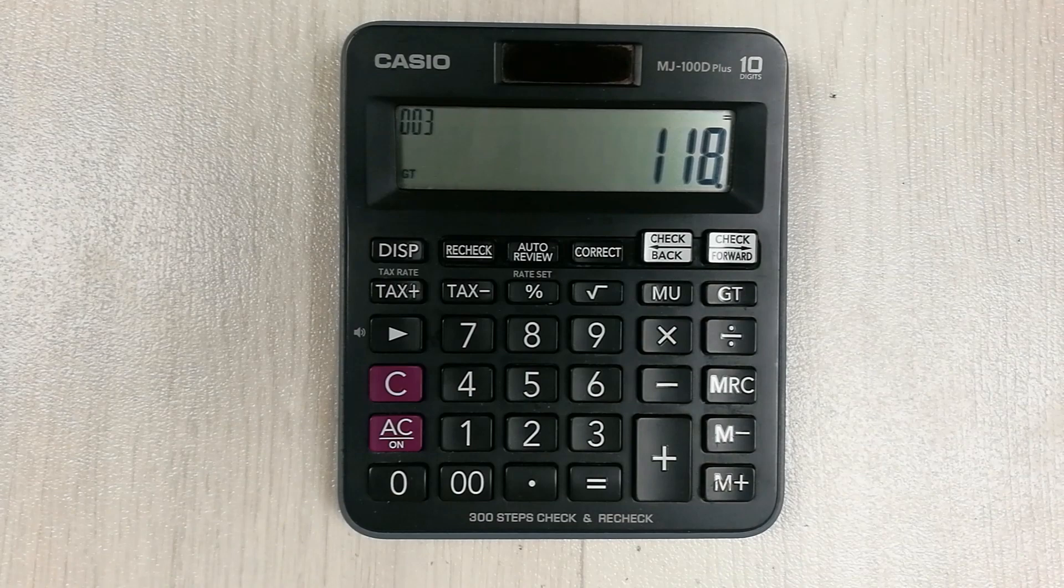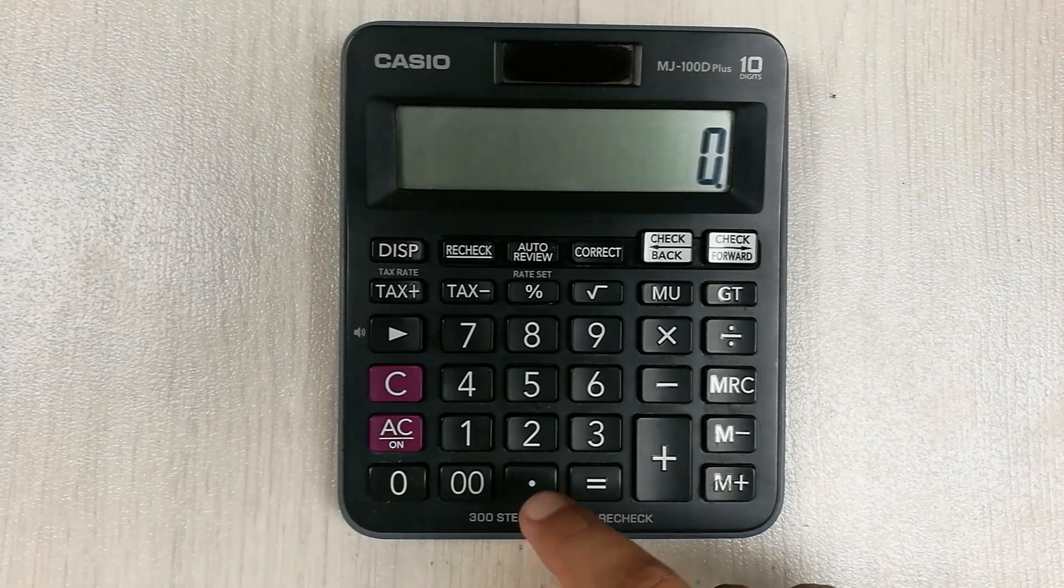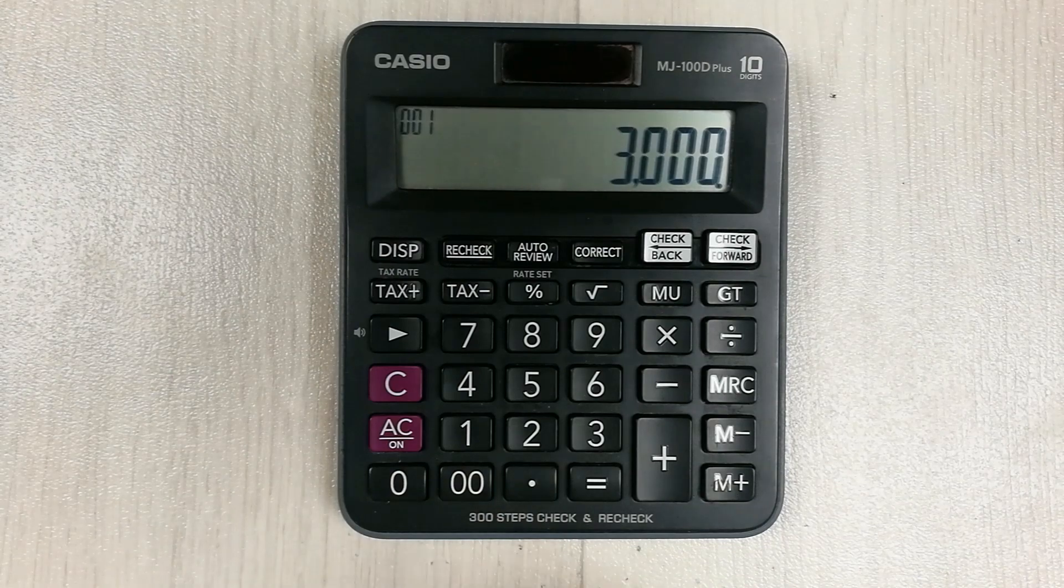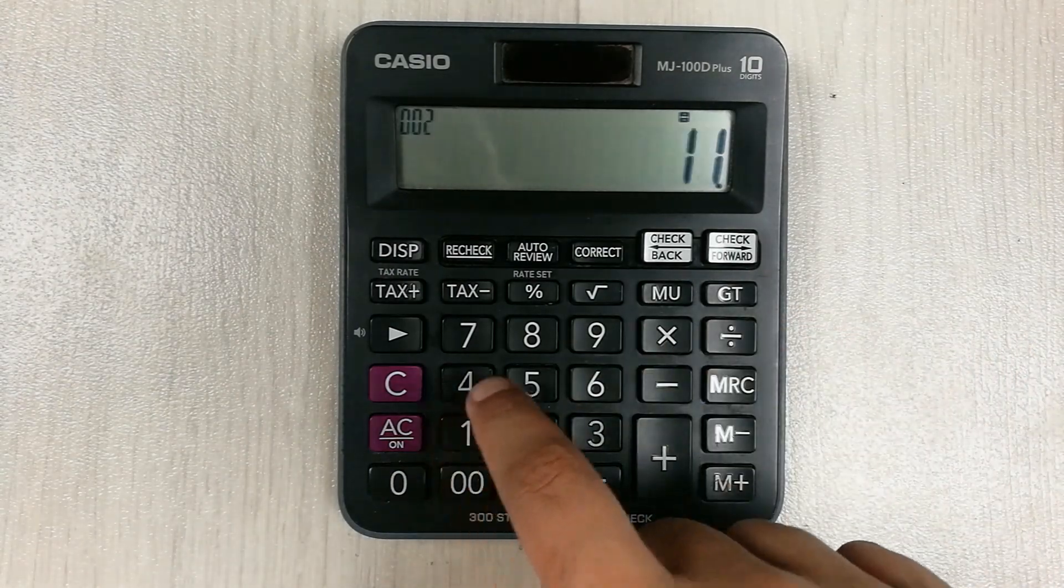In the second step we divide the price which is 3000, we divide it with 118. We press the equal button.